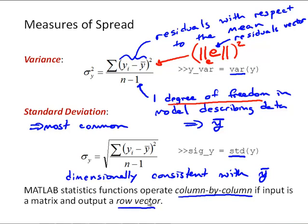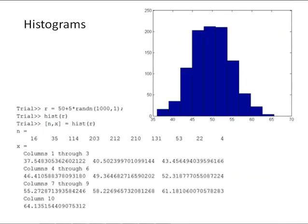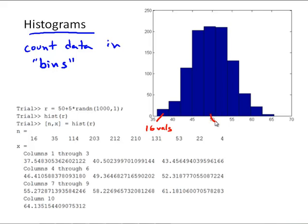As we're looking at a data set, one thing we might want to look at is how is that data distributed about the mean. A visual representation of that is called a histogram. Basically a histogram, what we do is count the data in what we call bins. We'll set up a bin, and in this case 16 values in that bin, over here in that central bin, 212 values. And all that's coming from this output that I'll explain in a minute.